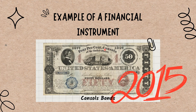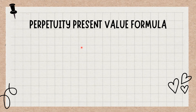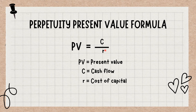Perpetuity Present Value Formula. The formula to calculate the present value of a perpetuity, or security with perpetual cash flows, is as follows: PV equals C divided by R, where PV equals present value, C equals cash flow, and R equals discount rate.